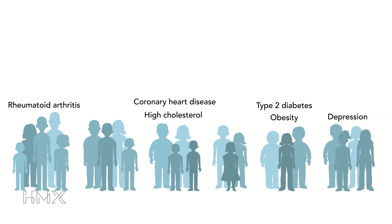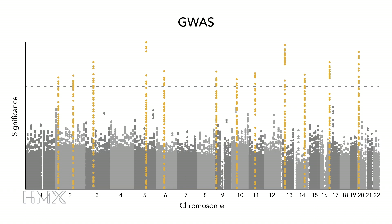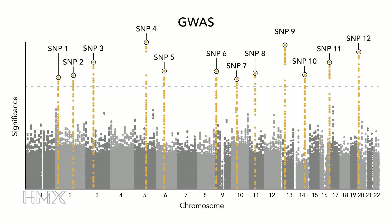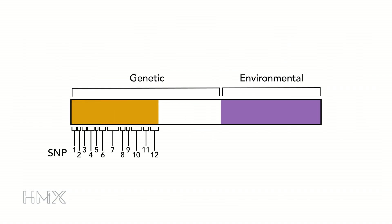Each complex trait has a different amount of heritability, which tells us how much of the variation observed in that trait can be accounted for by genetics. Genome-wide association studies can provide further insight into the genetic basis of a disease by allowing identification of disease-associated variants and calculation of an odds ratio, which provides an estimate of how much a variant increases or decreases risk of a condition. However, most traits still have a substantial amount of missing heritability, meaning that we don't yet understand all of the genetic risk factors.